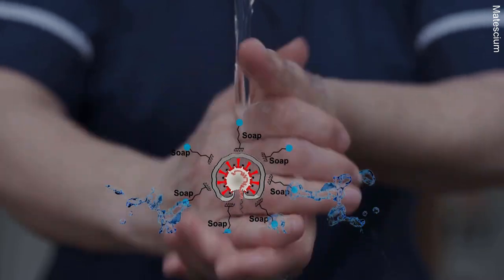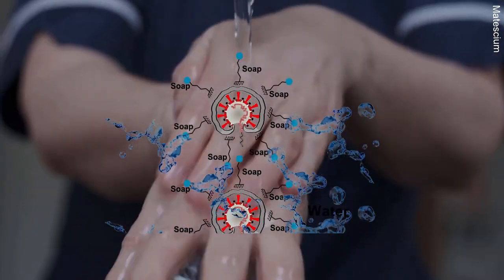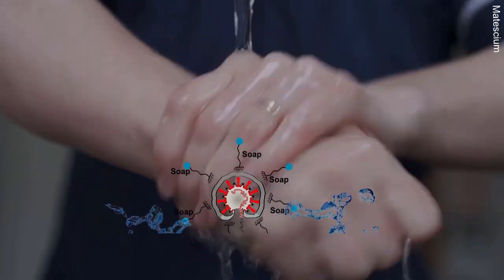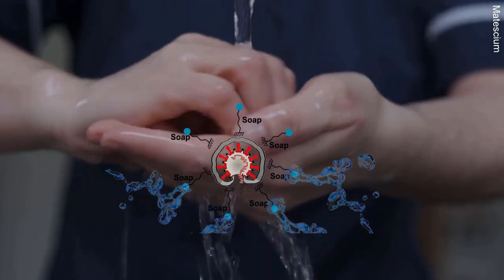Rinsing soap water on your hand means coronavirus and other microorganisms are trapped by soap molecules and washed away along with the water. In simple terms, soap plays a role as glue between water and coronavirus.